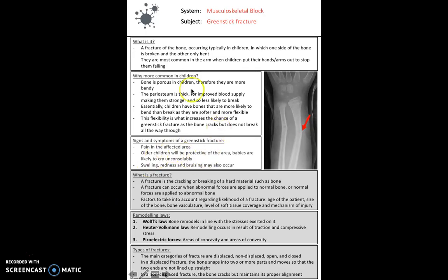The signs and symptoms of a greenstick fracture are pain in the affected area. Older children will be more protective of the area and younger children or babies will start to cry uncontrollably. Swelling, redness and bruising may also occur up to hours after the injury.